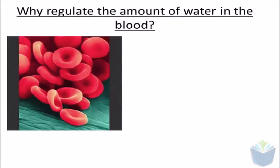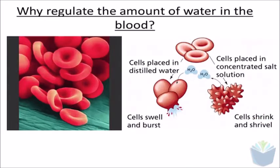But why is osmoregulation so important? Well, if you take our blood cells for example — if we drink too much water, then what can happen is that our blood plasma becomes less concentrated. And if that happens, then our cells might take on water and cause them to burst.